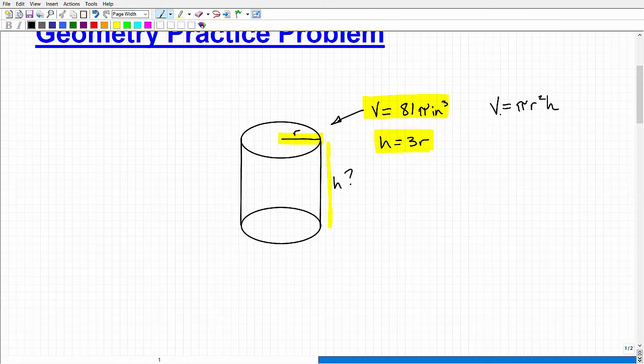All right, so we know that the volume equals pi R squared times H, R being the radius and H being the height of the cylinder. But we're given the volume, and it's 81 pi inches cubed. So remember, volume is always going to come in units cubed.